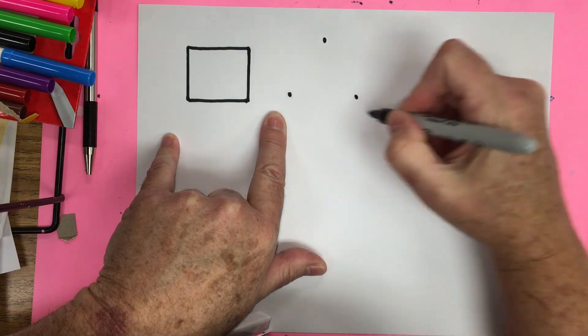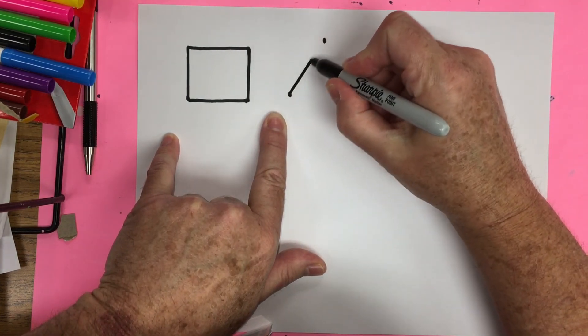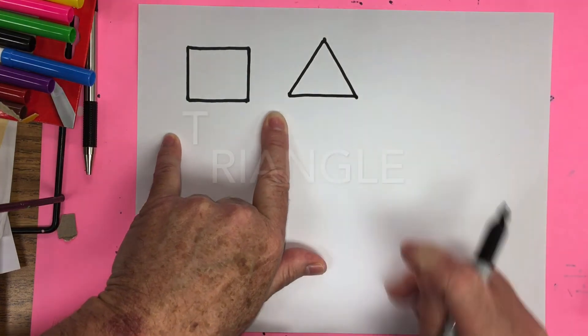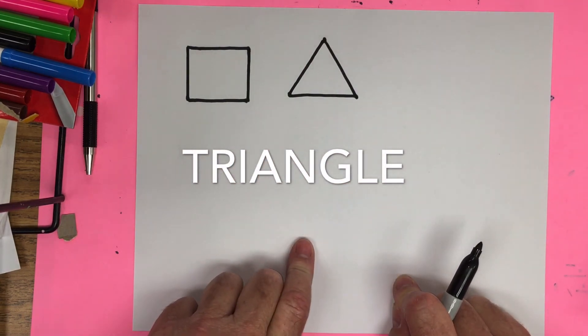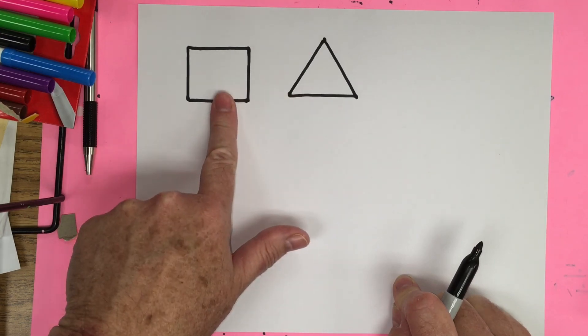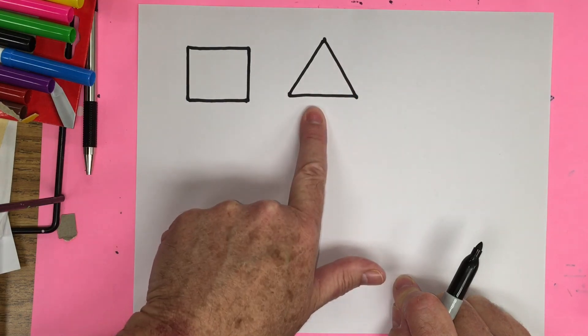Triangles have three sides and three corners. Now I'm just going to connect the dots with a straight line. And there we have a triangle. It's different from a square because a square has four sides and a triangle has three.